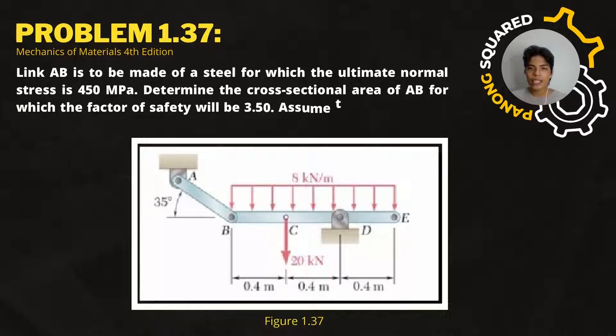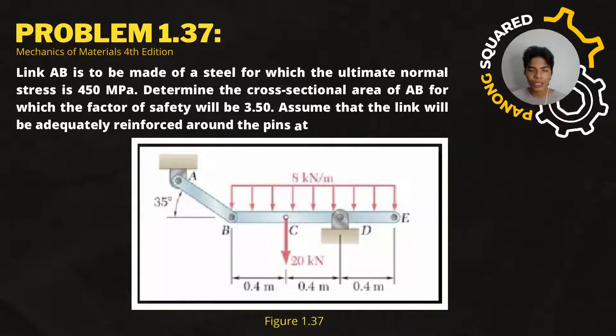The problem states that the link AB is to be made of a steel for which the ultimate normal stress is equal to 450 MPa. Determine the cross-sectional area for AB for which the factor of safety will be 3.50.